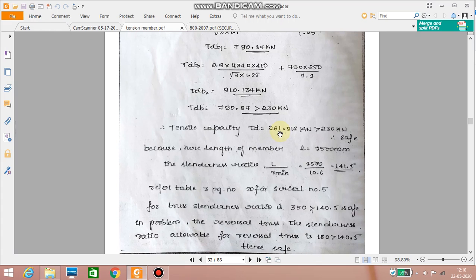Therefore Td is equal to 261.818 kilonewton. Again it is greater than 230 kilonewton. Therefore the selected section 75 by 50 by 10 mm is sufficient to take up the applied load of 230 kilonewton. Therefore the selected section is safe.